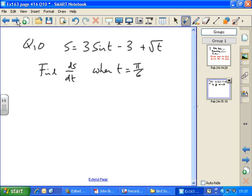To differentiate, we've got to use laws of indices to tidy up the last term in this function. So we rewrite it as s equals 3 sine t minus 3 plus t to the half. Square root of t is t to the half.